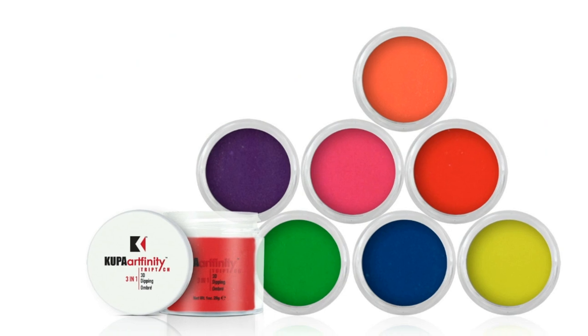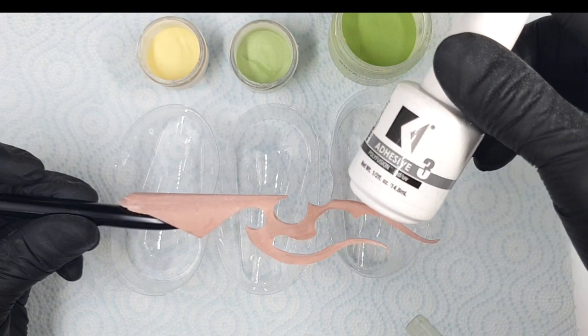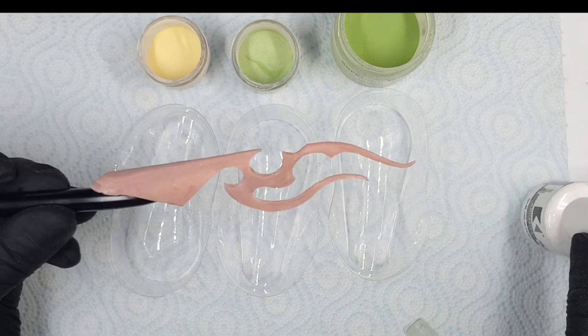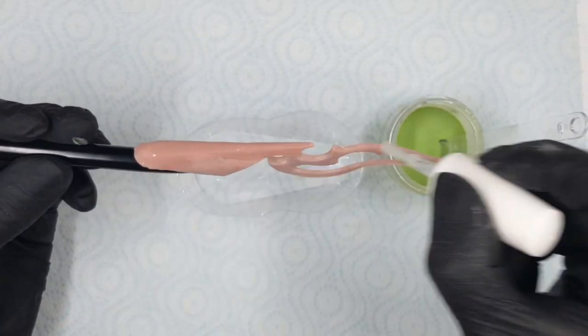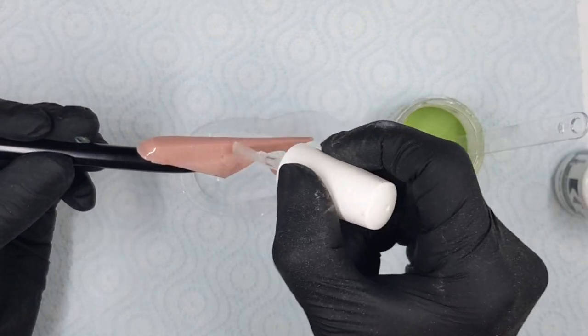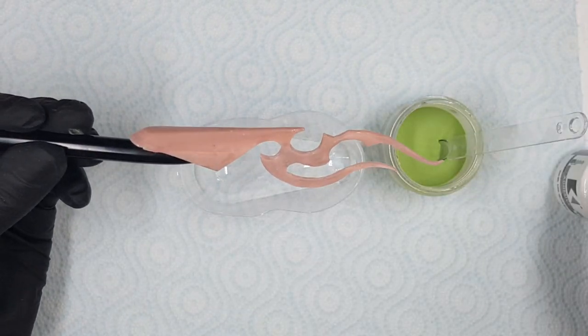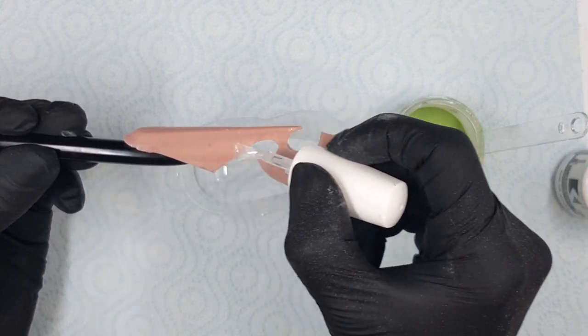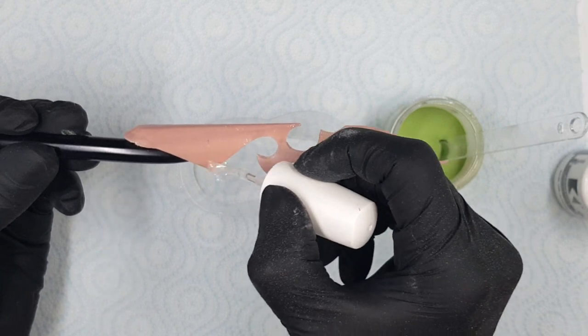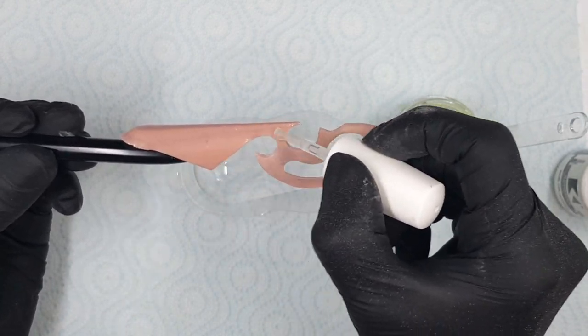Kupa's Artfinity Triptec acrylic color powders include three techniques in one base: ombre nails, 3D art, and the dipping nail system. Let's put this ombre on this long nail shape. I'll use a paper towel on the table to work clean. For this part of sugaring, we'll apply it very thin. For the color in the base, I'll use the color Green Fairy.